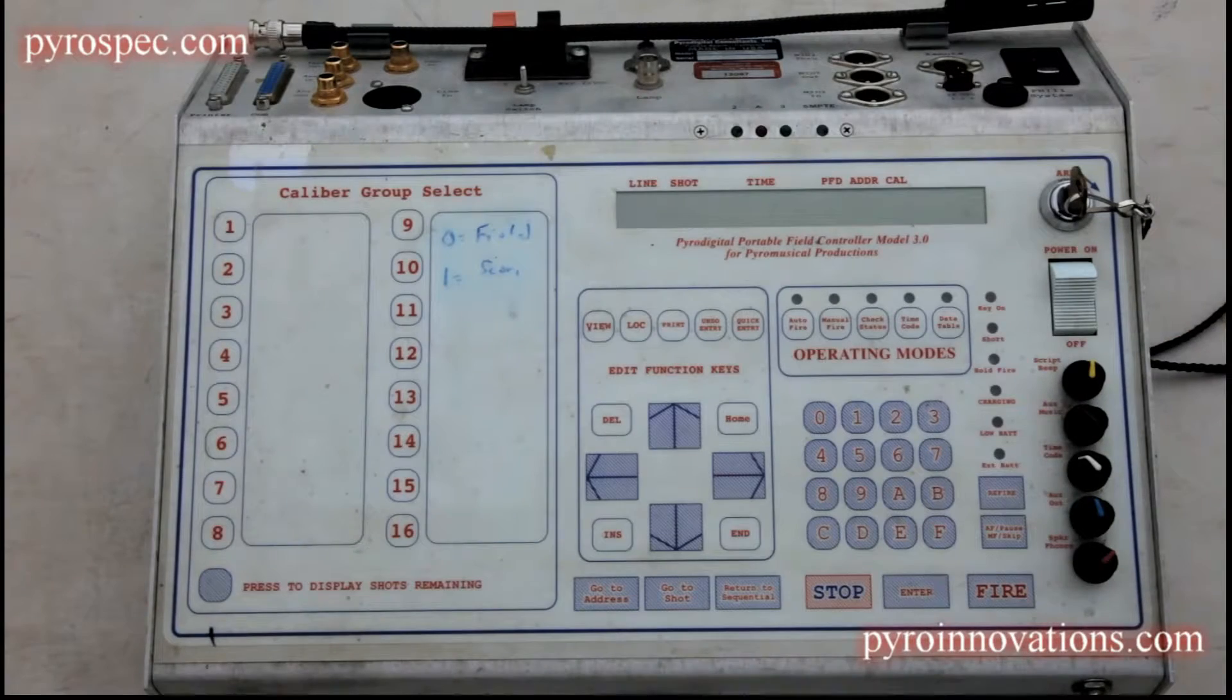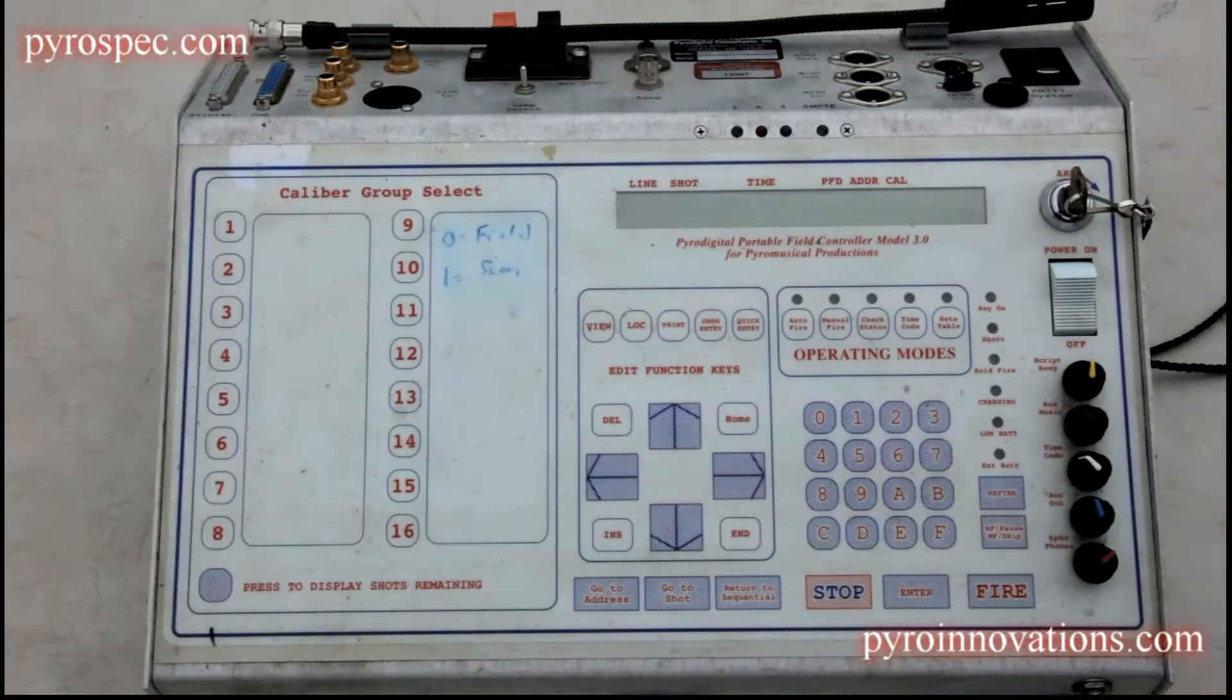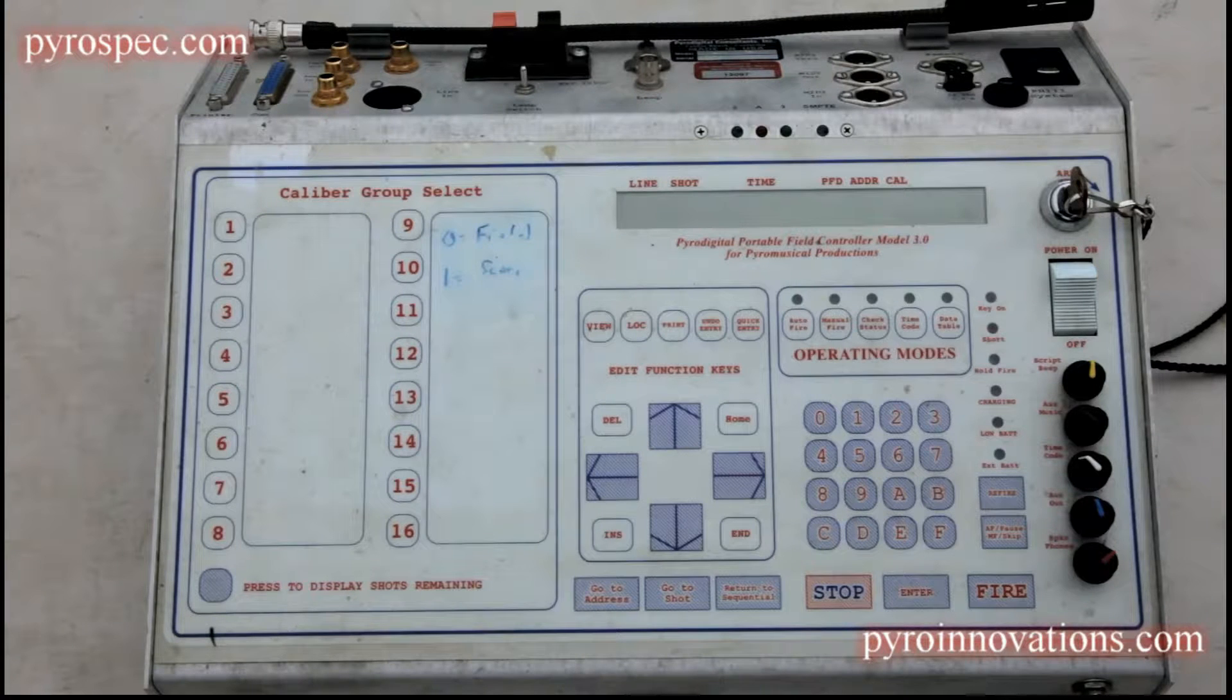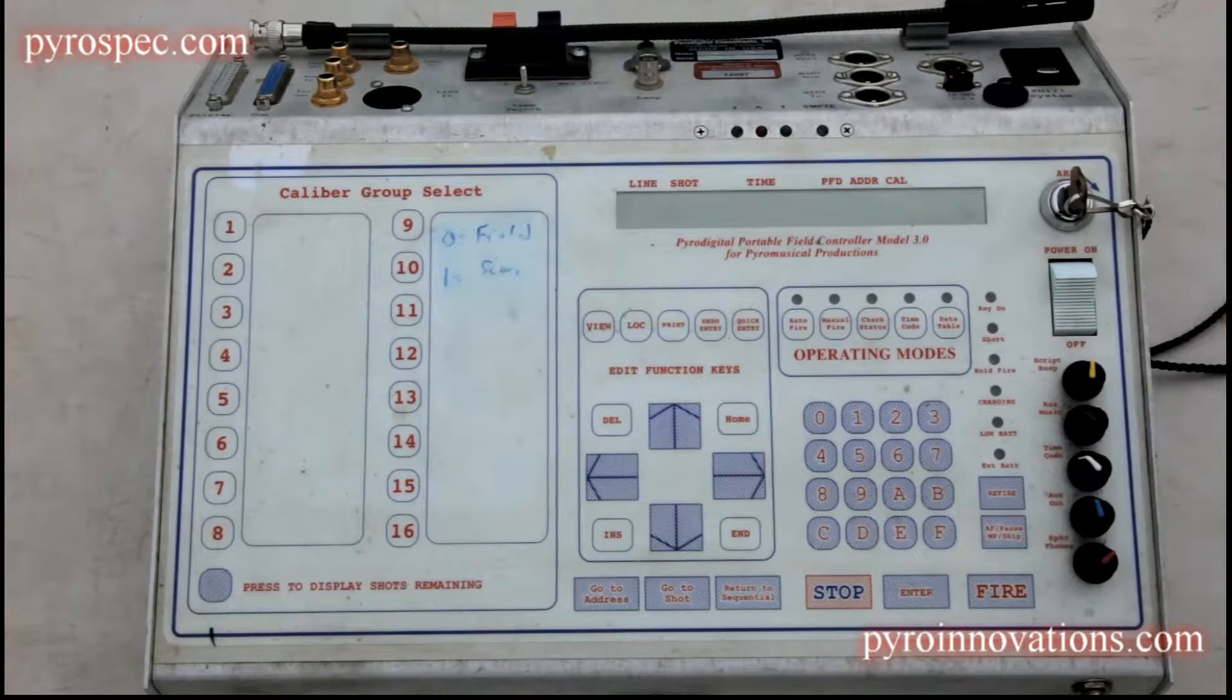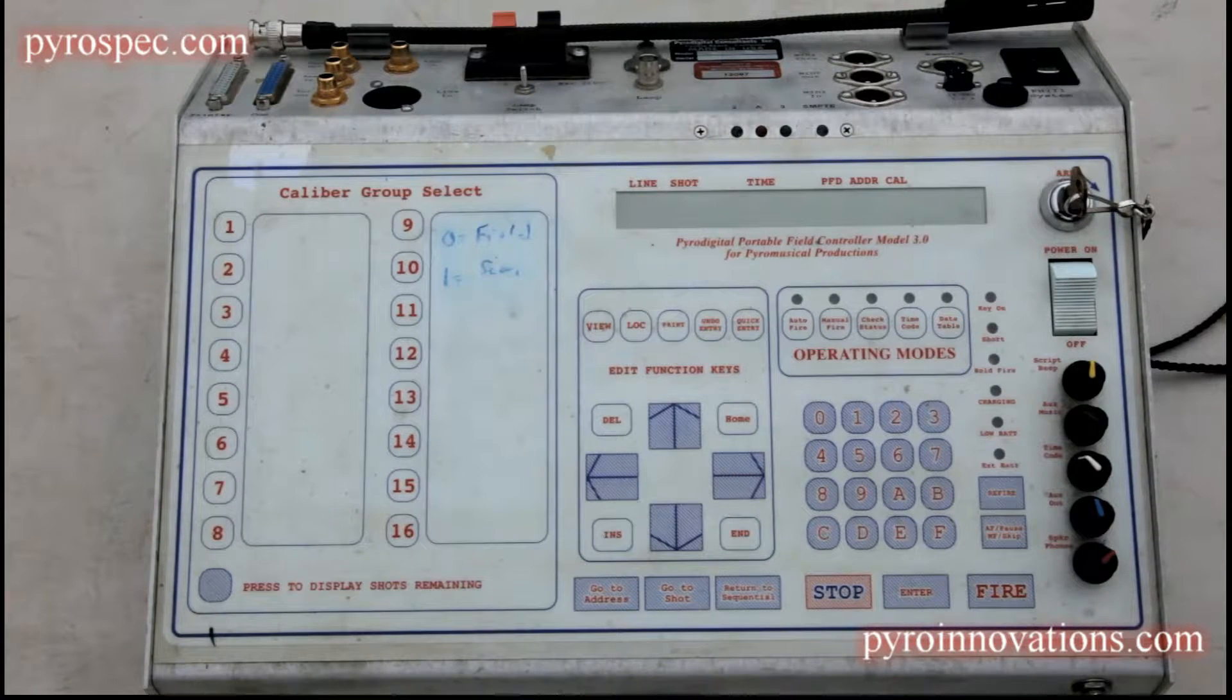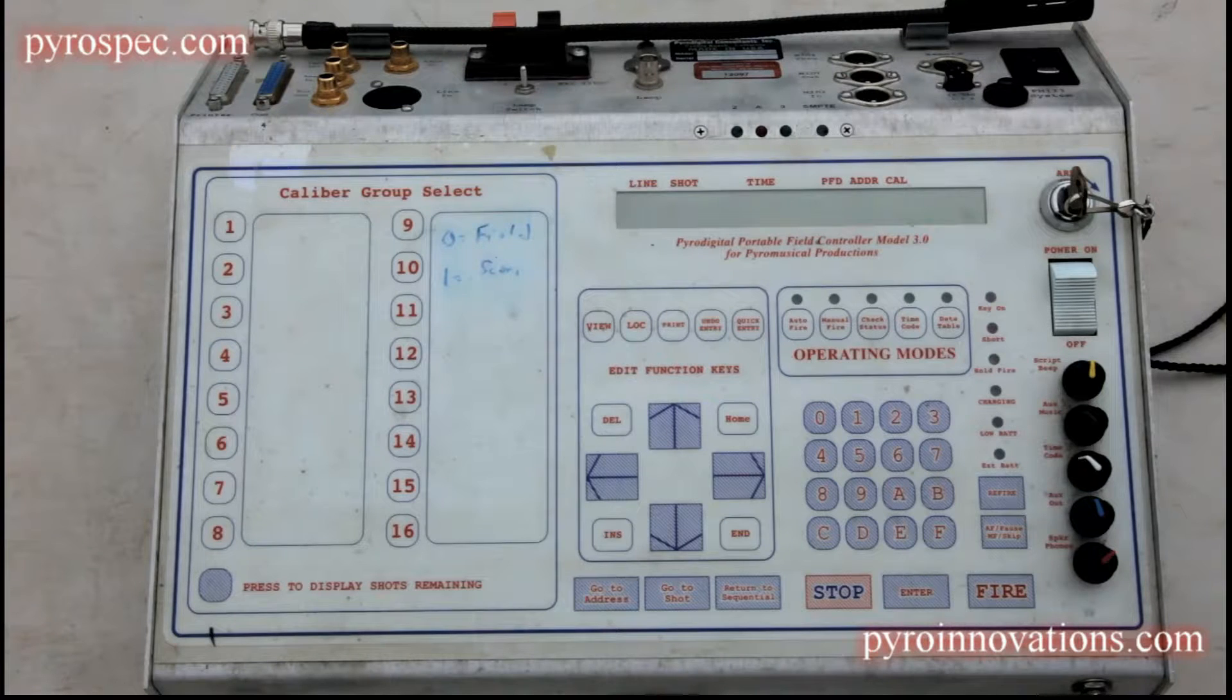We're going to go through how to run a timecode quality check. In most cases, your timecode is going to be run to you over a hard line, but sometimes that hard line could be a significant length or you could be running over a wireless timecode link. In those cases, sometimes it's good practice to check the quality of the timecode just to ensure that you're not going to have any issues when you go to sync up during show time.